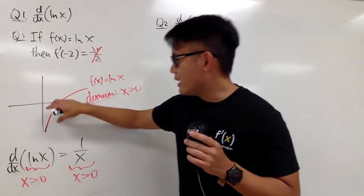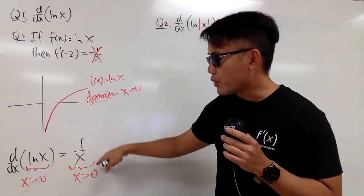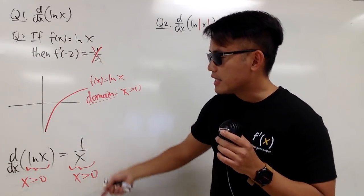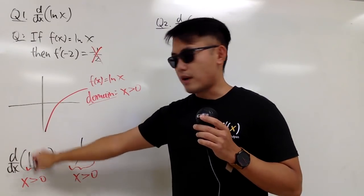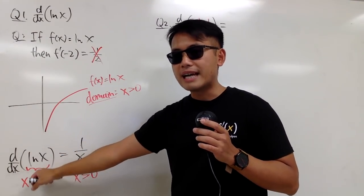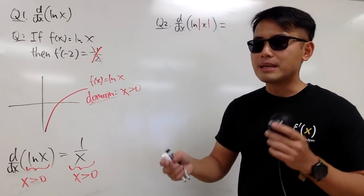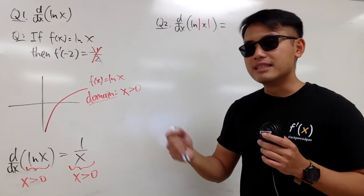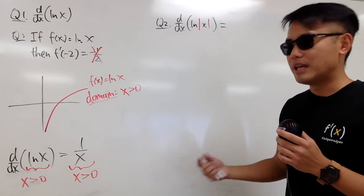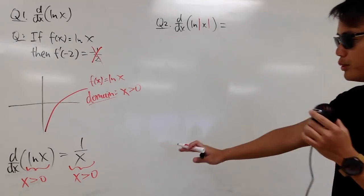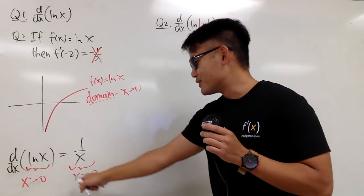In this case, the domain for 1 over x, the derivative, is the same as the original — x greater than 0. Sometimes you may have a function where the domain of the derivative is actually smaller. For example, the absolute value of x is not differentiable at 0, so you lose 0 in the derivative of the absolute value.